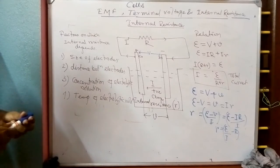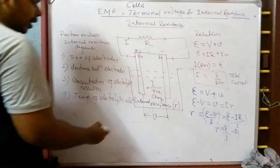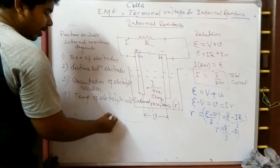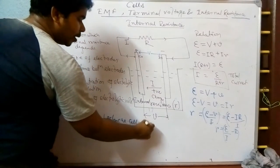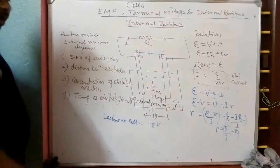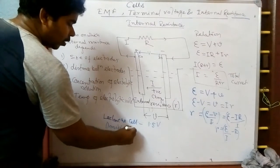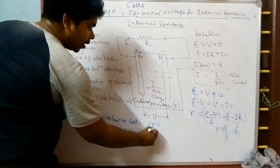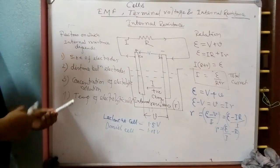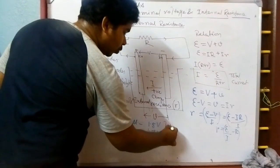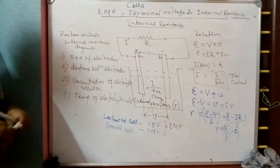Two important primary cells you'll use in practicals: the Leclanché cell whose EMF is 1.5V, and the Daniel cell whose EMF is 1.08V. These values will be needed later.